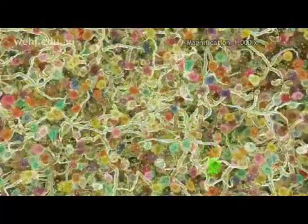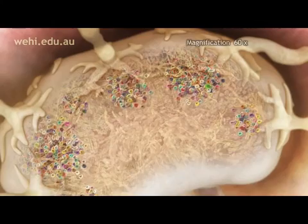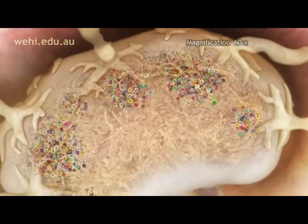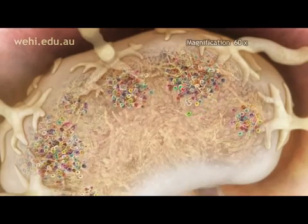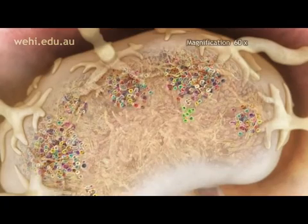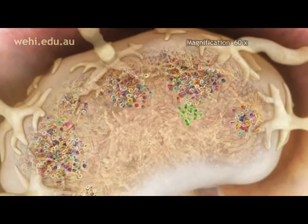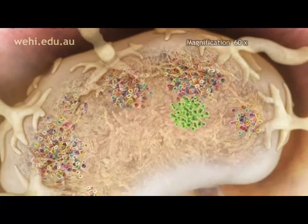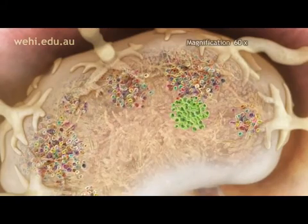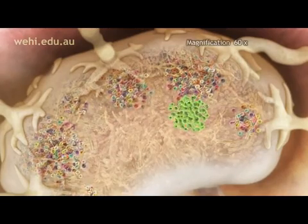The activated B cell migrates and begins to replicate. In a few days, thousands of copies of the selected cell are made. This is the central idea in Burnett's clonal selection theory, where one cell is selected out of billions of B cells, and identical clones have been created from it. Therefore, the cell is clonally selected.